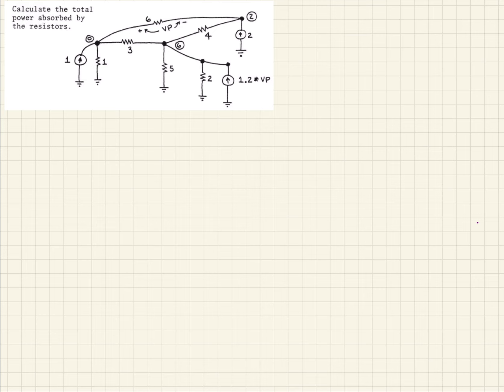First we want to start with node zero. We're going to go around each branch and add up all the currents leaving and entering the node, setting that equal to zero — we'll do that for each of the three nodes. We're defining current leaving a node as positive, so the current source going into the node will be a minus one for that branch.